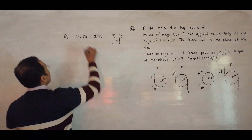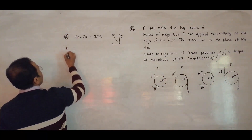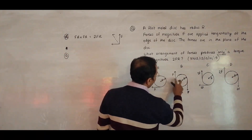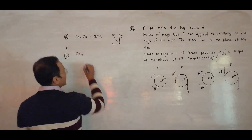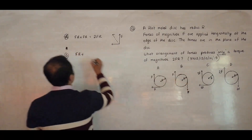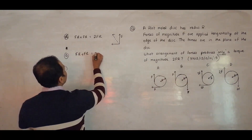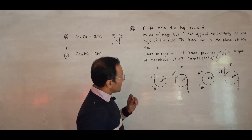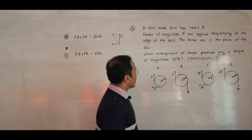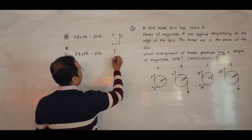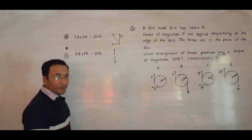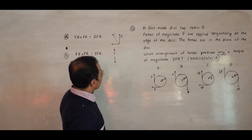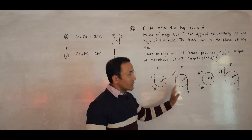For choice B, the torque produced is F×R plus F×R, giving a total of 2FR. Now checking for a resultant force — the two forces are in exactly opposite directions, so they cancel and give zero resultant force. Choice B produces torque only, making it the correct answer.